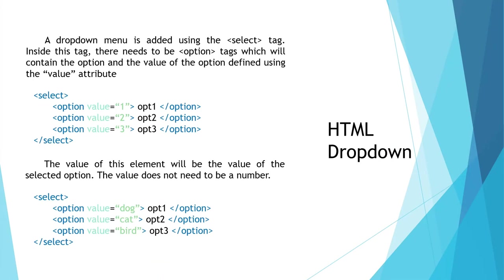The next type of element I want to talk about is a drop-down menu. To create one we're going to be using the select tag, and inside this select tag we're going to have an option tag for each of the options in the drop-down menu. Inside these options we need to define their values, otherwise their values are going to be null, which is basically undefined. Their values can be numeric or plain text. Now let's get our hands dirty in VS Code.